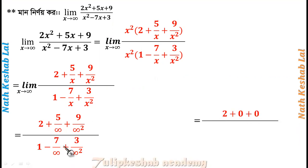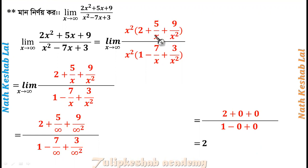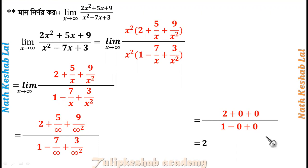This becomes 2 plus something by infinity — zero — plus something by infinity — zero. So the numerator approaches 2 and the denominator approaches 1. Something by infinity goes to zero, something by infinity goes to zero, giving us the limit.